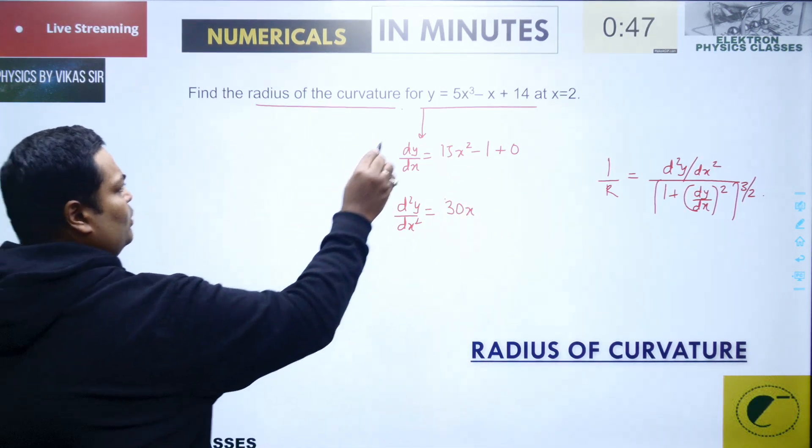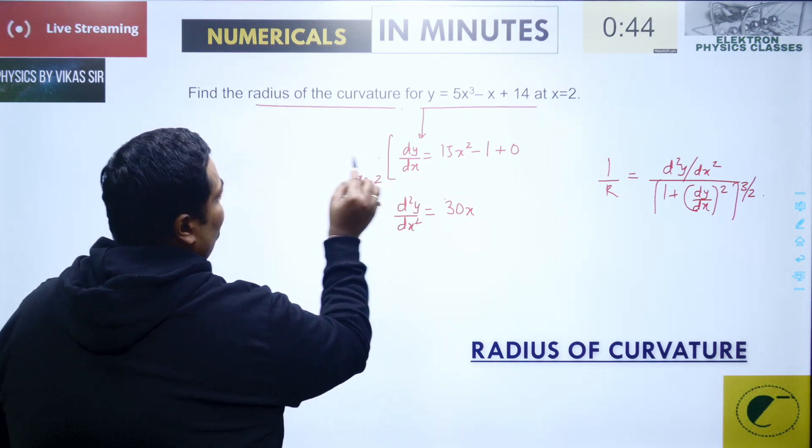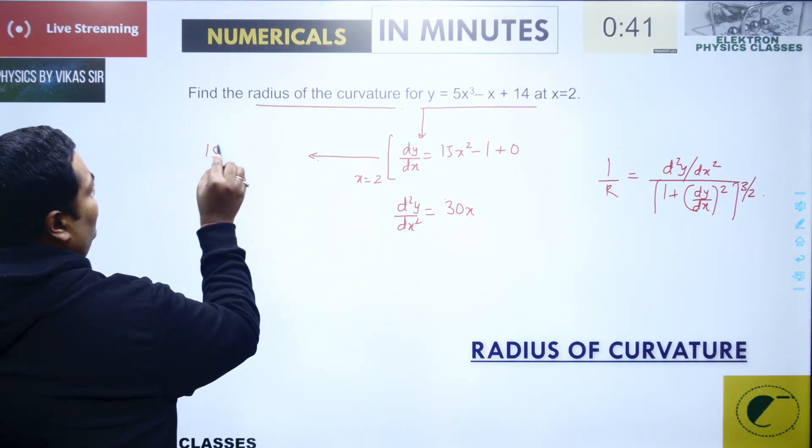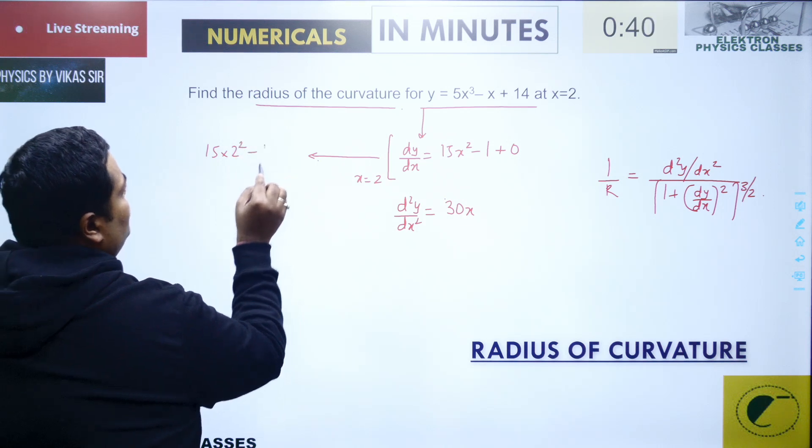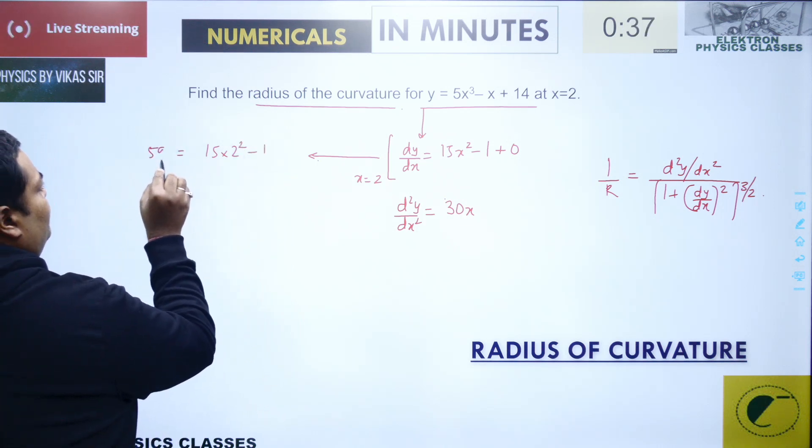Now I need to calculate this particular value at x equal to 2. So that gives me 15 into 2 square minus 1, which is 60 minus 1, 59.